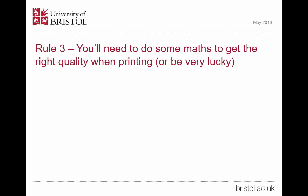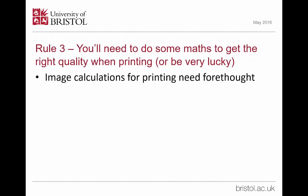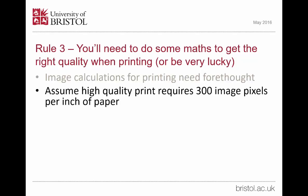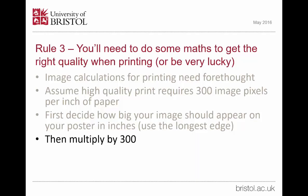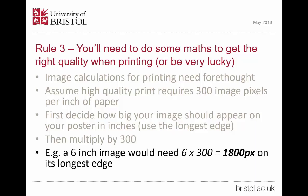Rule 3: you'll definitely need to do some maths in order to get the image quality right when it comes to printing. Always assume a high quality print requirement of about 300 pixels per inch. If your printer uses less than that, it doesn't matter — at least you've got enough information there to utilise. The first thing to decide is how big you want your image to be on your poster. Just work on the longest edge to make your life simple. Multiply this figure by 300, which is the print resolution. Therefore, if it's a 6 inch image, you would need to multiply 6 by 300 to give you the required number of pixels on the longest edge — in this case 1800.